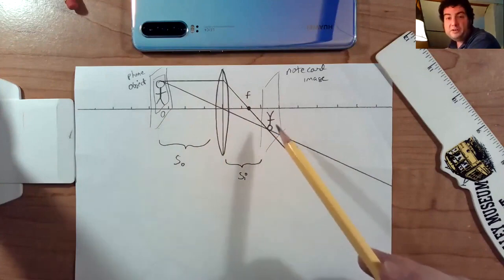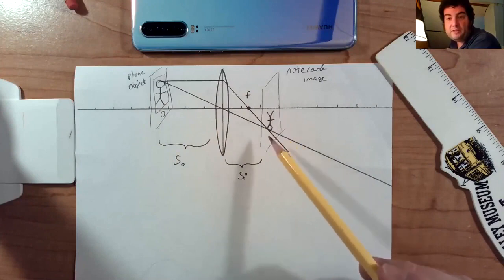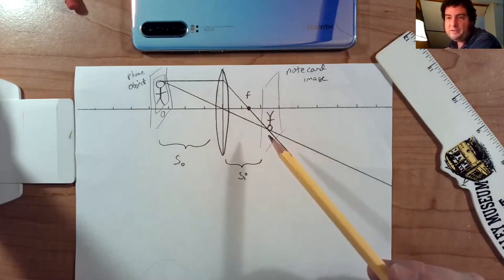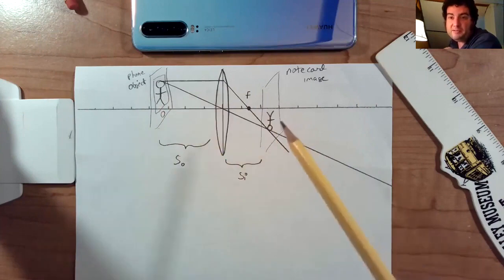Notice that these two are converging on the opposite side of the central axis. That's what really helps me justify the fact this image is inverted. Also notice it's a different size than the object.